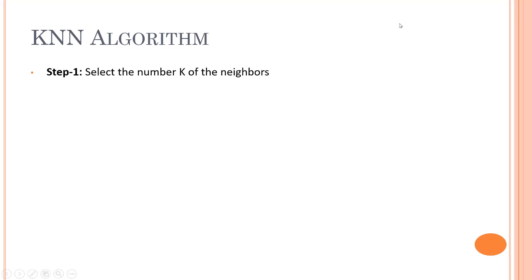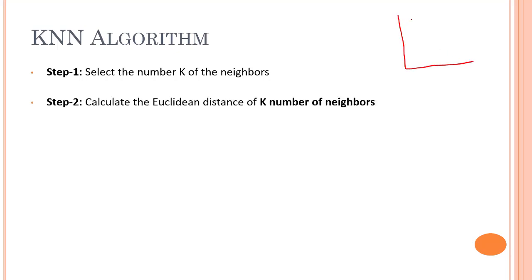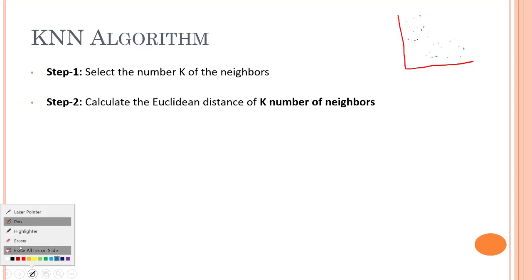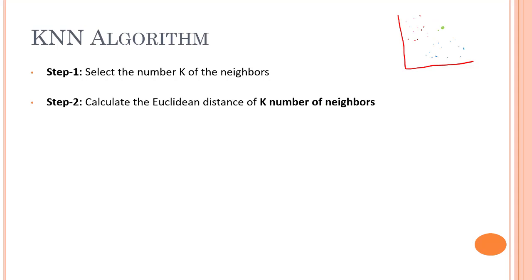Let's say we have some data points over here and some data points over there. Then let's say we have a new point — I need to mention the number of neighbors that needs to be computed to help us know which category it belongs to. The red dots are for category one, and the blue ones are for category two.